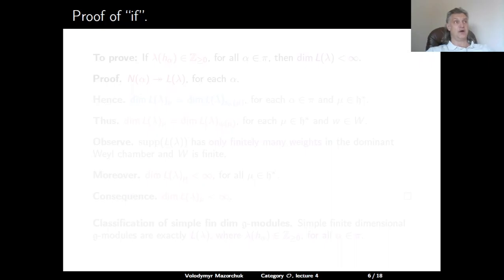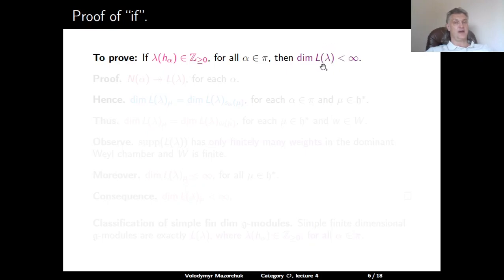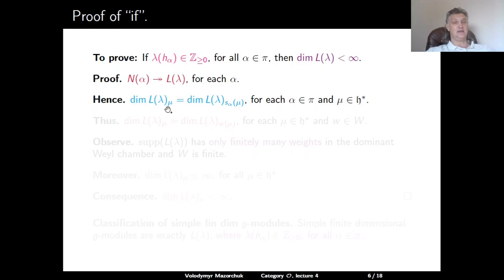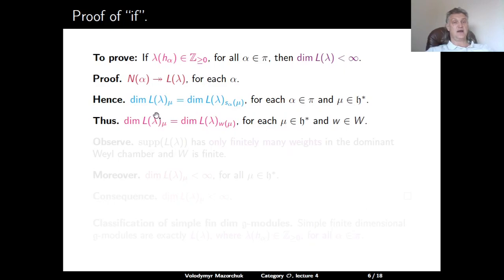Now we prove the if-part of the classification theorem. We need to show that when λ(H_α) is a non-negative integer for every simple root α, L(λ) is finite dimensional. For any simple root α, N_α surjects onto L(λ), so the character of L(λ) is invariant under the simple reflection s_α. Since this holds for all simple roots and the Weyl group is generated by simple reflections, the character of L(λ) is invariant under the full Weyl group W.